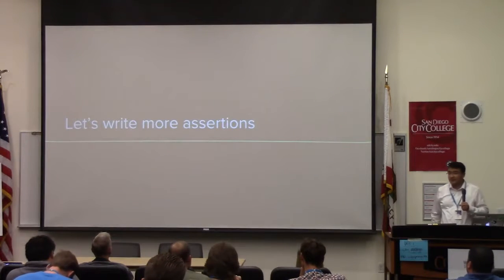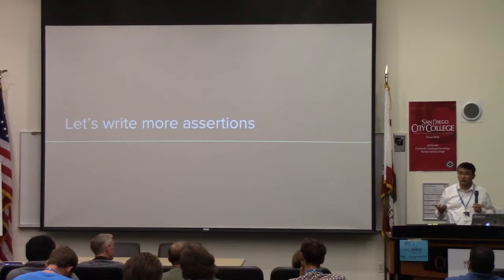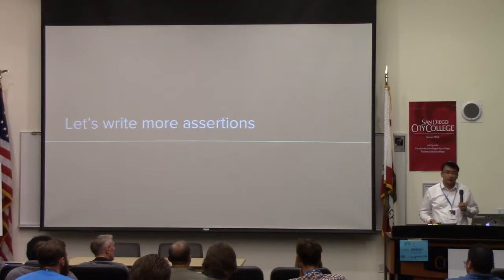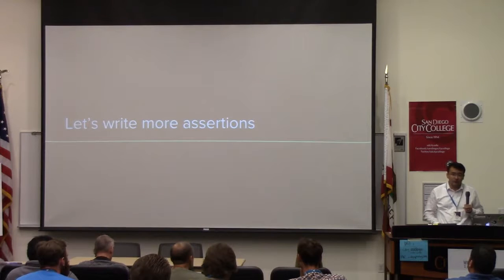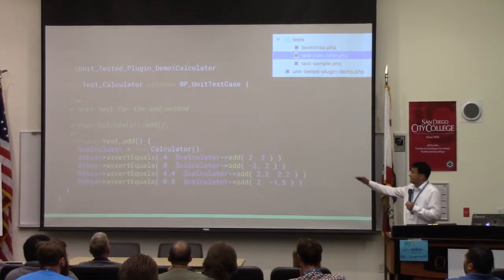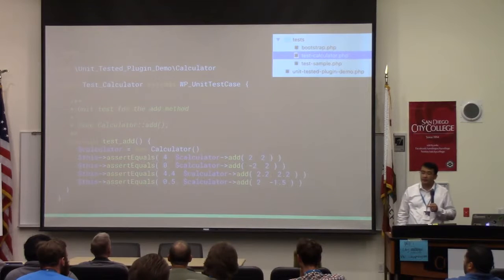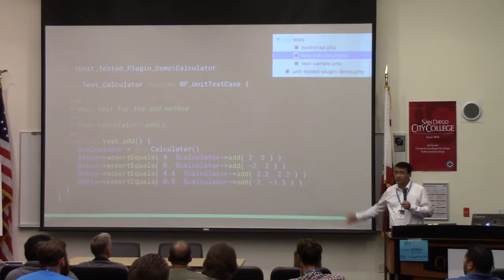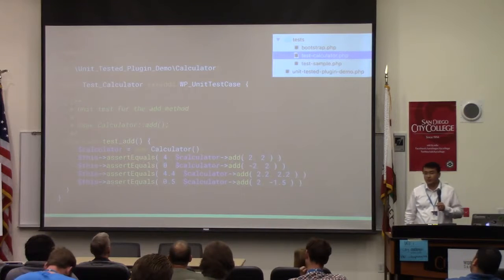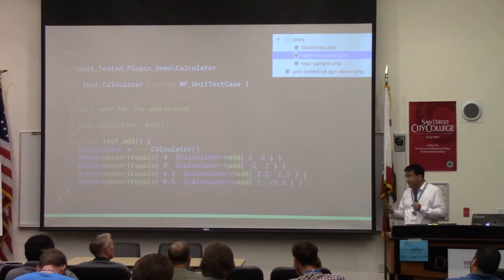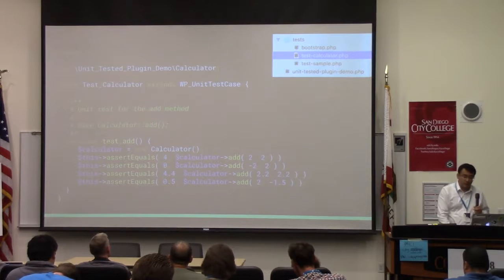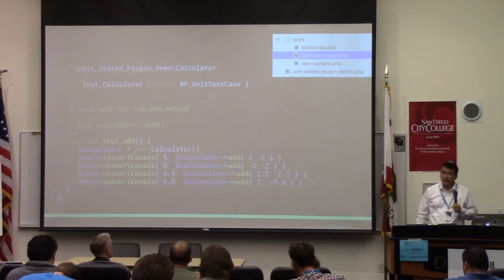That's your first test. To be more competent about that method, you should write more assertions. You can try sending negative numbers, you can try sending numbers with decimal points, and different assertions. If you run the test again it will show you that you ran two tests but with many more assertions, and it should more thoroughly test if the method works correctly.